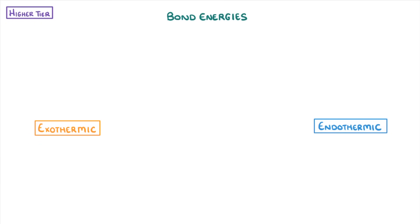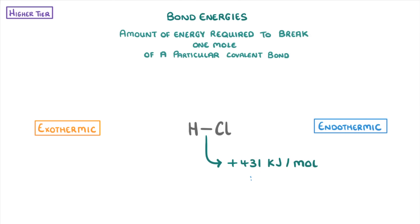When we say bond energy, what we're actually referring to is the amount of energy needed to break one mole of a particular covalent bond. So if I had an atom of hydrogen bonded to an atom of chlorine and said that the bond energy was positive 431 kilojoules per mole, that means we'd have to supply 431 kilojoules of energy to break one mole of these bonds. And remember, one mole would be 6.02 times 10 to the 23 bonds, which is Avogadro's constant.